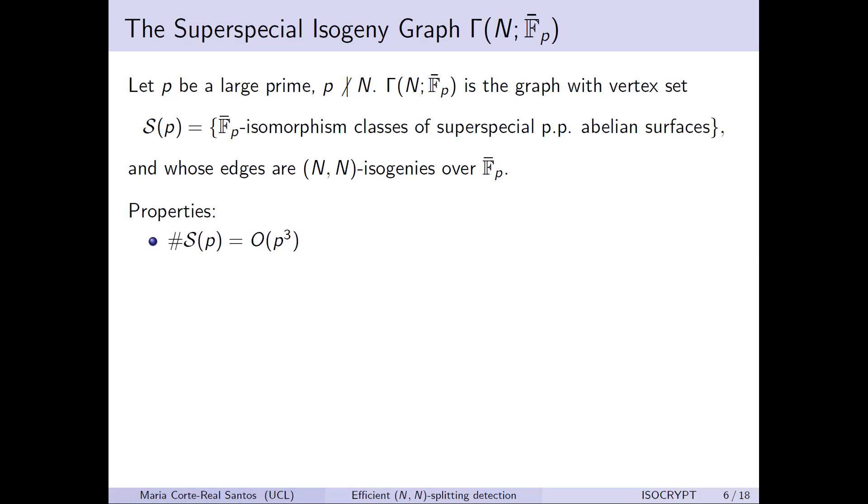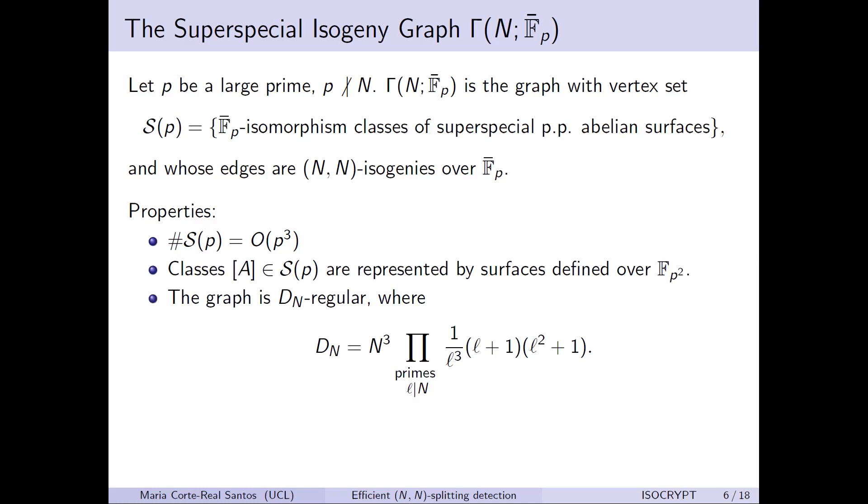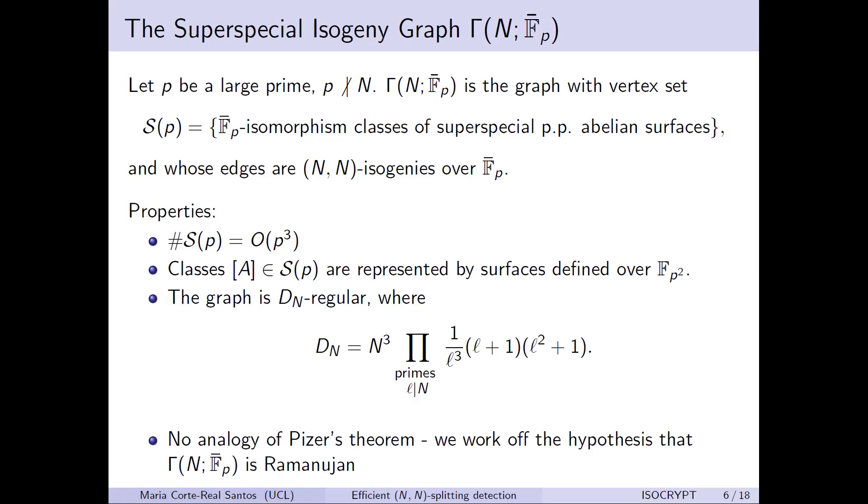The graph has nice properties: the vertex set is finite — one reason superspeciality is the right generalization — the isomorphism classes can be represented by surfaces defined over FP squared, and the graph is D_N-regular, where when N is prime, D_N equals N squared plus one times N plus one. Unfortunately, there's no proven analogy of Eichler's theorem, so primitives built in genus two often just assume the graph is Ramanujan, but there's no proof.